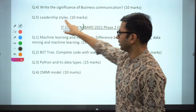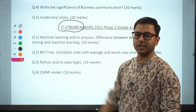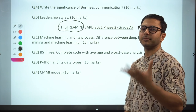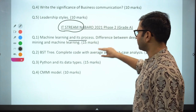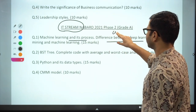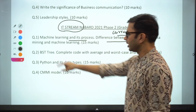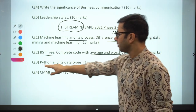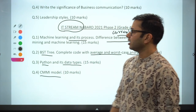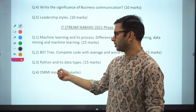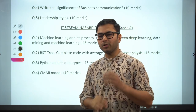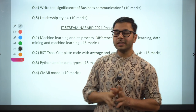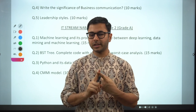I also got hold of some IT stream questions, though I don't provide guidance for IT stream — finance specialist and general stream guidance is available, not IT stream. The IT stream questions were: 'Machine learning and its process; difference between deep learning, data mining, and machine learning'; 'What is a BST tree — complete code with average and worst case analysis'; 'Python and its data types'; and 'CMMI module.' From these questions, it appears the paper was not very difficult — basic questions for anyone with theoretical understanding of information technology.